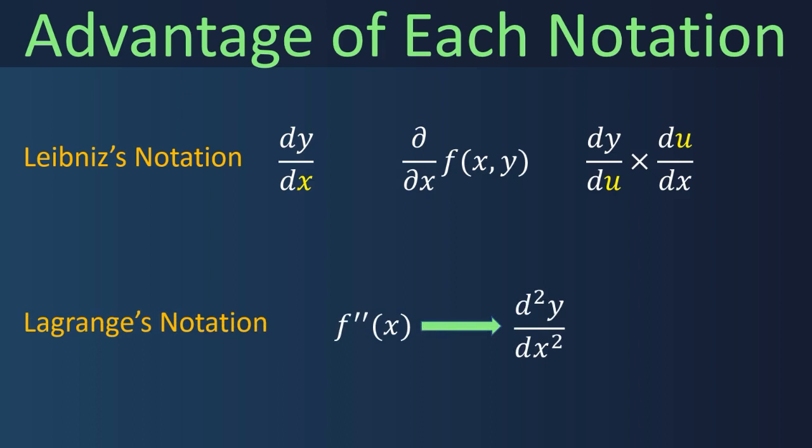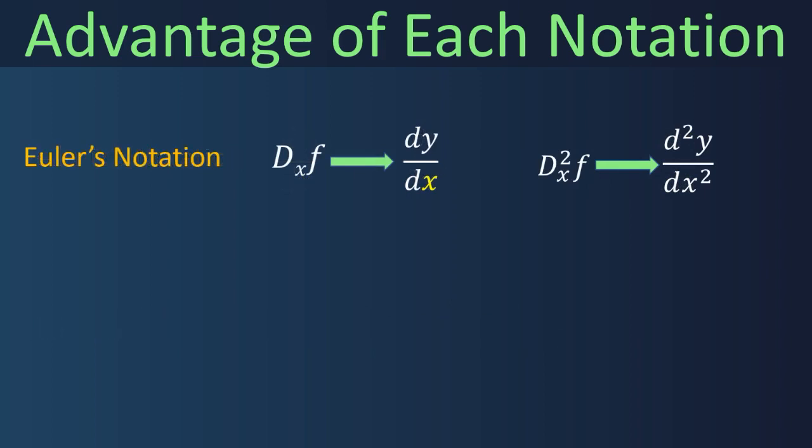Lagrange's notation is preferred when a function has two independent variables. Also, it is more compact notation than Leibniz notation. Euler's notation is useful for stating and solving linear differential equations as it simplifies presentation of the differential equation, which can make seeing the essential elements of the problem easier.